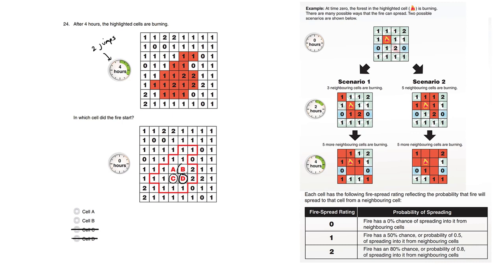Similarly, if the fire starts in cell B, it can't reach the far left cell. One, two jumps later, we can't quite reach it. So cell B is also impossible.